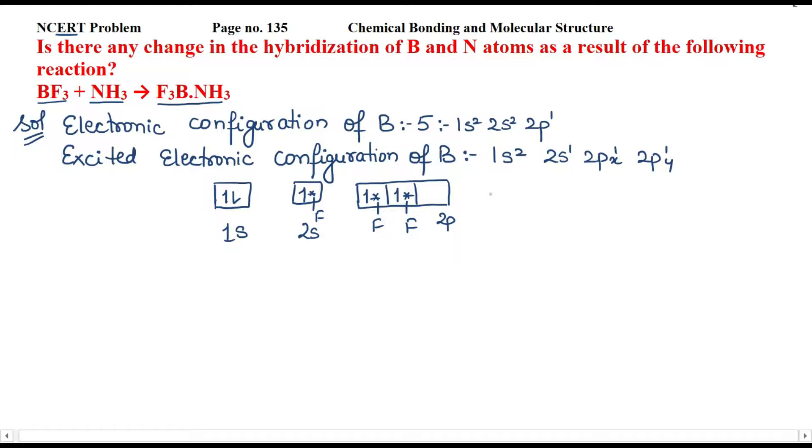So, this is hybridization of BF3. Hybridization of BF3 is sp2 because 1s orbital is coming up and 2p orbitals are coming up, right?